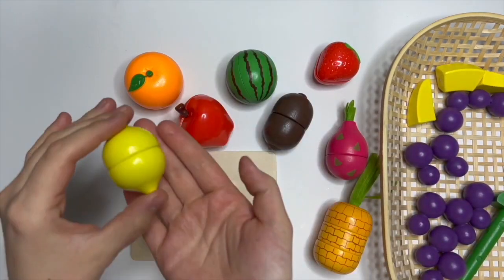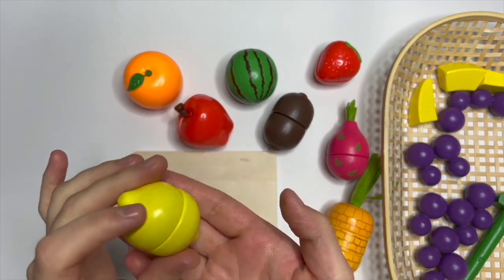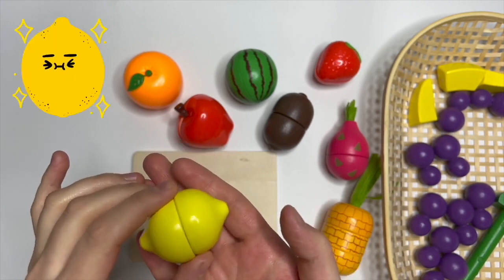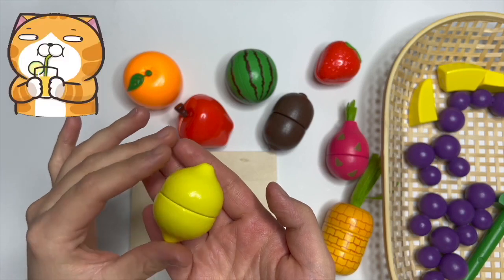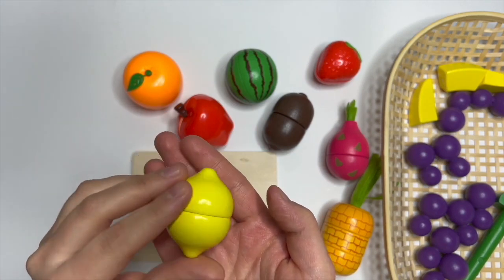Our next fruit is gonna be this small yellow lemon. Lemon is a great fruit. It's sour. Yes, I know. Did you know that if we drink lemon juice when we are sick, it helps us feel much better.